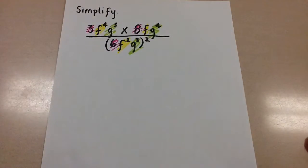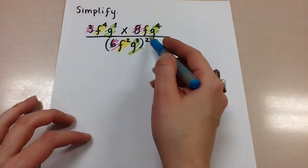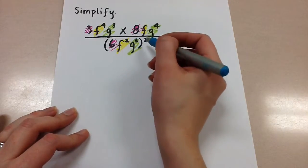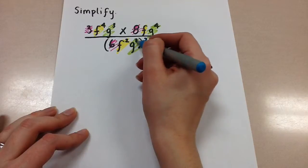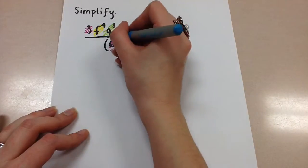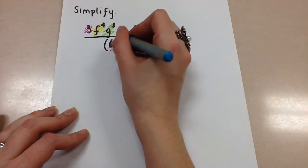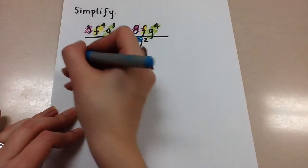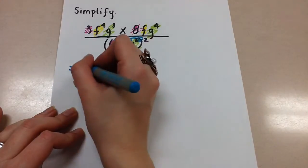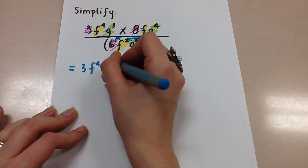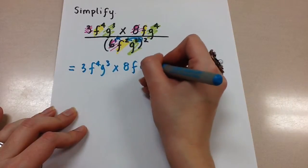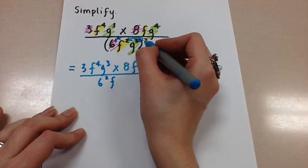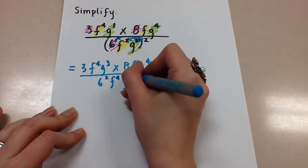The first thing I want to do is always work from the outside in. I have this set of brackets here raised to an exponent of 2. I need to bring that exponent into the brackets — we're going to use the power of a power rule, which says if we have a power raised to another power, we multiply the exponents. There is an exponent of 1 on the 6, so this 2 multiplies with the 1, the 2 multiplies with the 2, and the 2 multiplies with the 3. In the denominator we have 6 squared, F to the 2 times 2 is 4, and G to the 3 times 2 is 6.